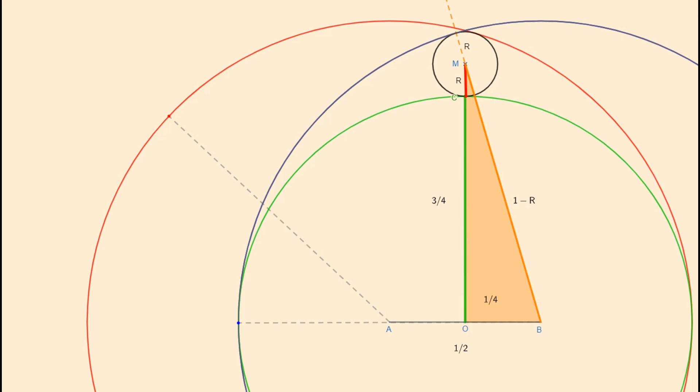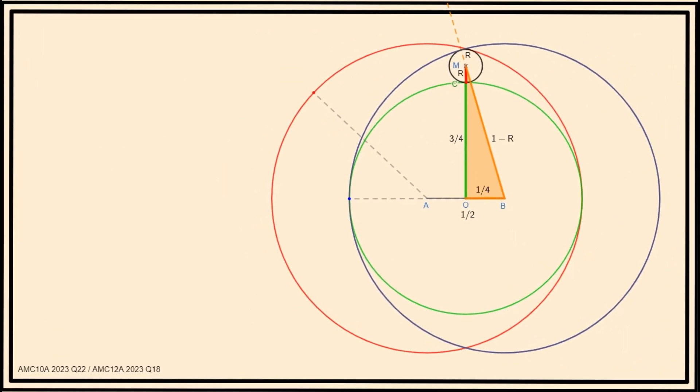Let's go back to the big picture. We have learned that in triangle BMO, the side OB has length 1/4, the side OM has length 3/4 plus R, and the side BM has length 1 minus R. We can now use Pythagoras theorem.